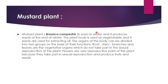This is a seed which has been produced by its end. The plant body is used as a vegetable, and its seeds are used to extract oil. The organs of the plant body can be divided into two groups: the first is the vegetative part and the second is the non-vegetative part.